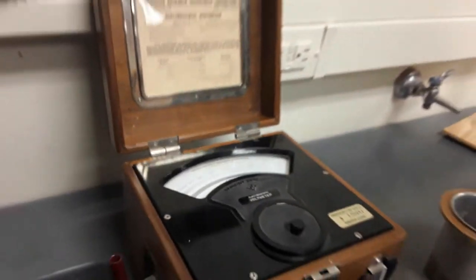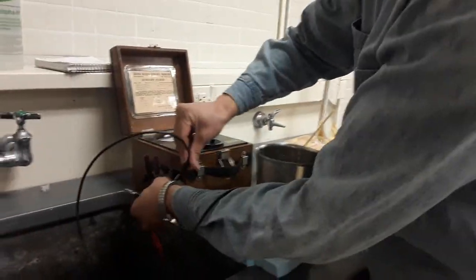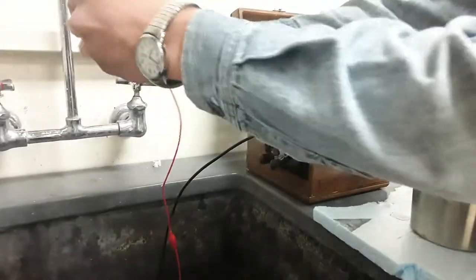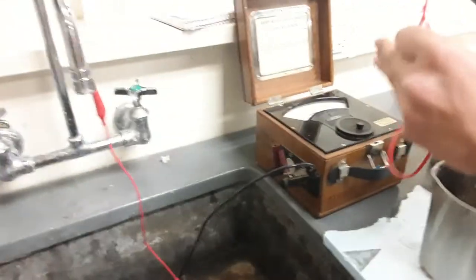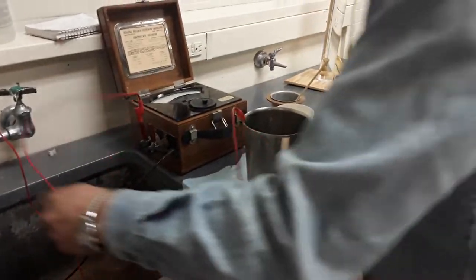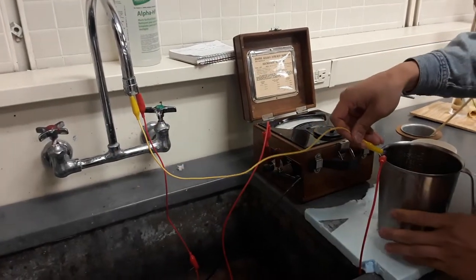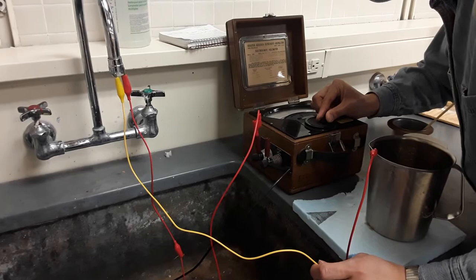This goes up to 500 volts and I'm going to connect one port to the sink which effectively grounds that part and then I'm going to connect the other port to our pail. I'm going to ground the pail to make sure that it has no charge to start with and make sure that our meter reads zero to start with.